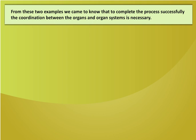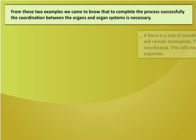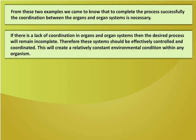From these two examples, we came to know that to complete the process successfully, the coordination between the organs and organ systems is necessary. If there is a lack of coordination in organs and organ systems, then the desired process will remain incomplete. Therefore, these systems should be effectively controlled and coordinated.